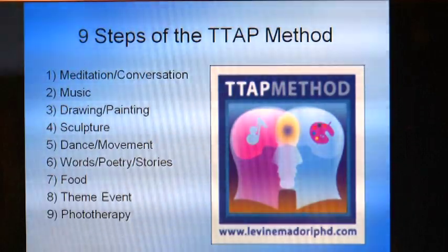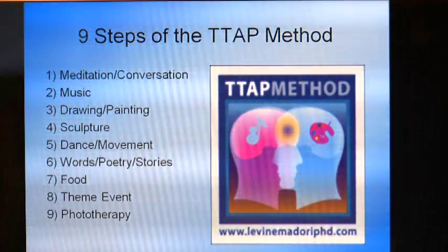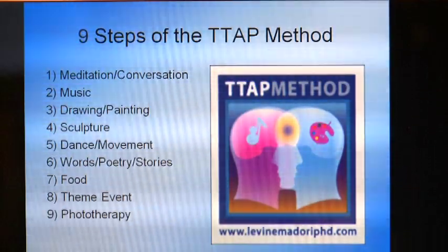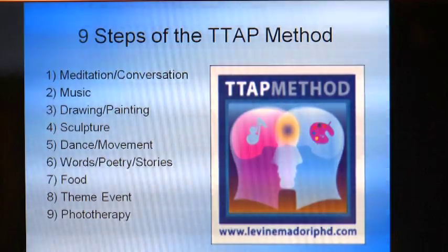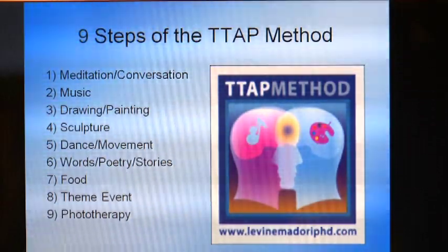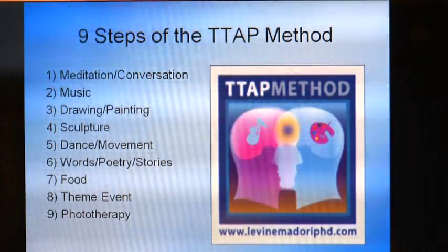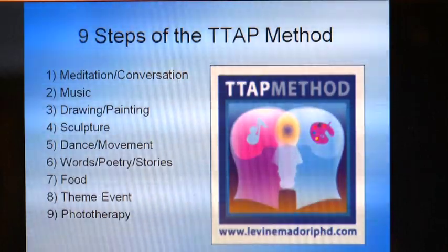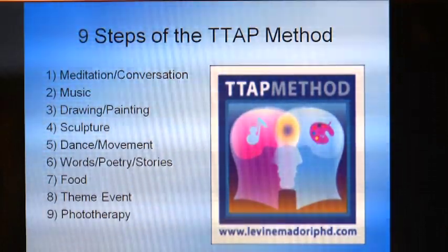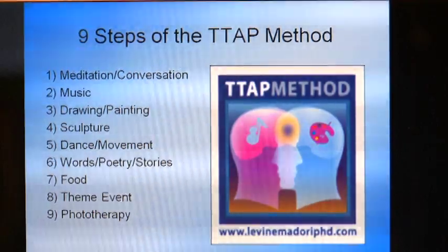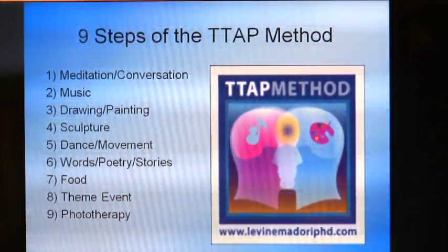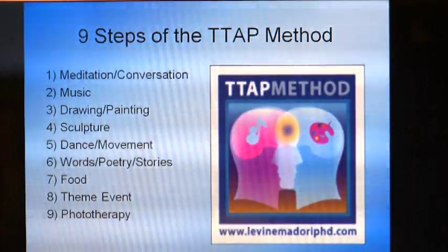Now to the nine steps of the TAP method. Step one: meditation and conversation. Step two: music — the first two steps I performed every session before going into art. Step three: drawing and painting. Step four: sculpture. Step five: dance and movement. Step six: words, poetry, or story — words on paper. Step seven: food. Step eight: theme event. Step nine: photo therapy. These nine steps summarize what I do in an orderly fashion to provide structure in the programming.